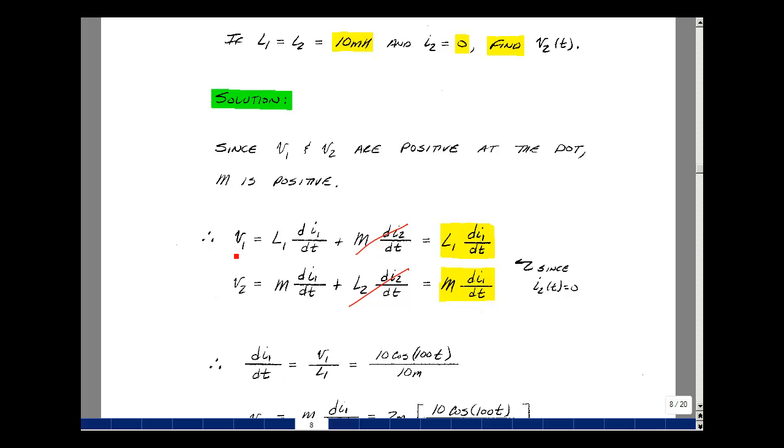Let's solve for the derivative. We know the value of V1, we know the value of L1, we can then solve for the derivative and then use that also over here. So solving, Di1/dt is equal to V1 divided by L1. V1 is specified as 10 cosine of 100t, and L1 was 10 millihenries.